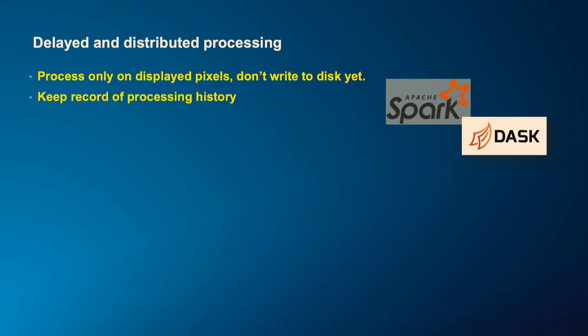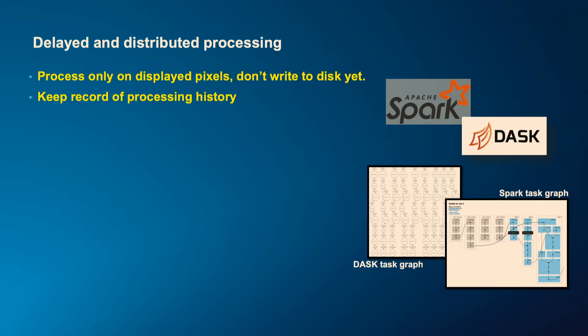There are some parallels to this — Apache Spark and Dask. These are frameworks you come across when dealing with big data sets. They have something called task graphs. This is how they chain different transformations you apply on really large data sets — only the data you want to visualize at any point is acted upon, then when you want to process it, it farms out to all worker nodes and applies it. We're trying to do the same kind of thing with raster functions here.